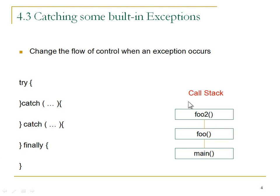This is called the call stack. When we were in main we called foo, then we're executing inside foo, when we called foo2 we're executing inside foo2. While we're executing lines of code inside foo2 we have this call stack. A call stack always has main on the bottom in a Java program, because when main is over the program is over. When foo2 is done executing, that box disappears and we go back and execute in foo.